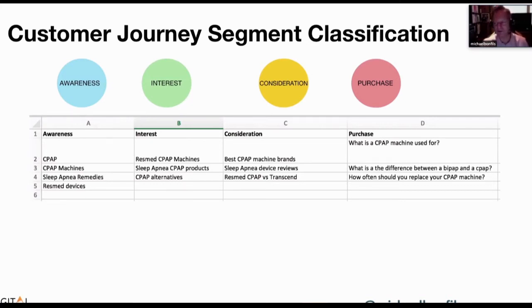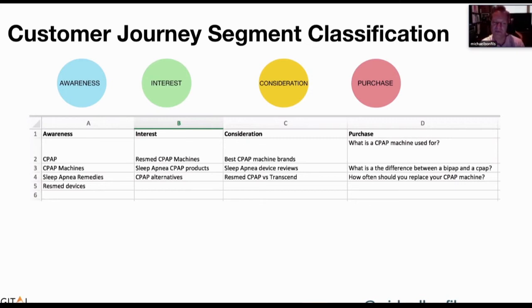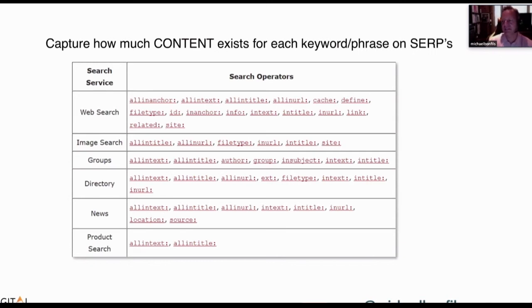So this is critical for the next stage. You take your keywords for one persona and create them under each category: all keywords related to awareness, all related to interest, all related to consideration, and all related to purchase. Now you've got this massive spreadsheet — and this is where the hard work comes in. You've got to take every one of these keywords and start identifying what content exists out there. You can use search parameters in Google, go into directories, news — there are many ways to understand how much content exists around each specific question.